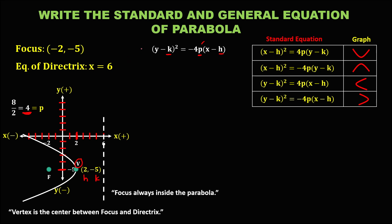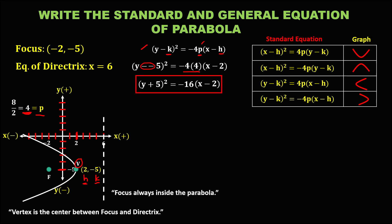We can now write the standard equation using the formula. We have (y − k), where k is negative 5, so (y − (−5)) equals 4 times p times (x − h). Since p is 4 and h is 2, and simplifying the double negative, negative 4 times 4 equals negative 16, giving us (y + 5)² = −16(x − 2). This is the standard equation for this parabola.